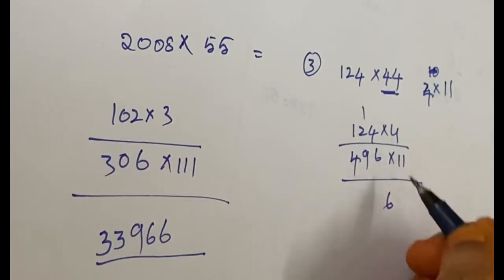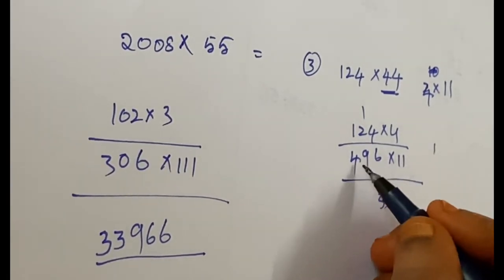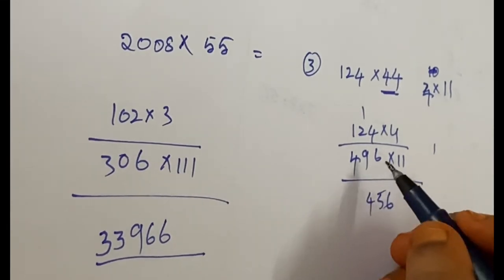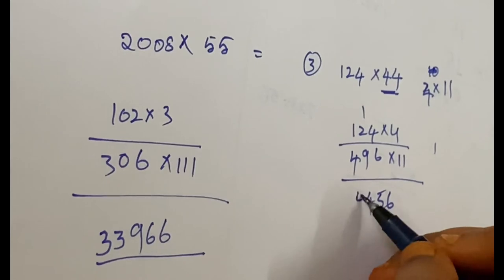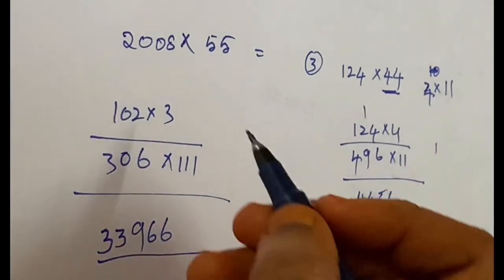Here, units place: 6. 9 plus 6 is 15. 9 plus 4 is 13, plus 1 is 14. 4 plus 1 is 5. So this is the answer.